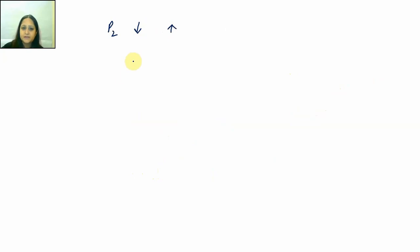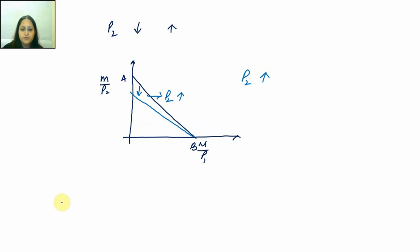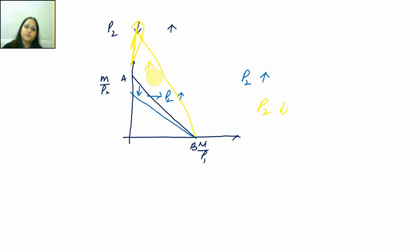Similarly, what happens when P2 falls or rises? When P2 rises, the y-intercept (m/p2) falls because the denominator is rising — so affordability reduces and the budget line moves inward. When P2 falls, I can afford much more of good two, so the y-intercept rises and the budget line rotates outward.